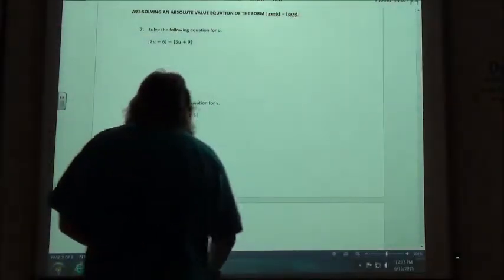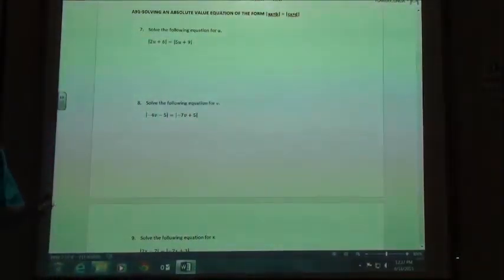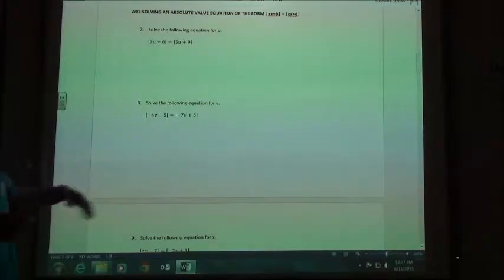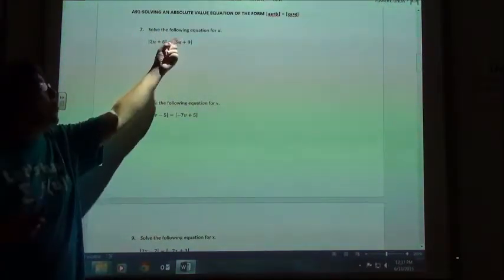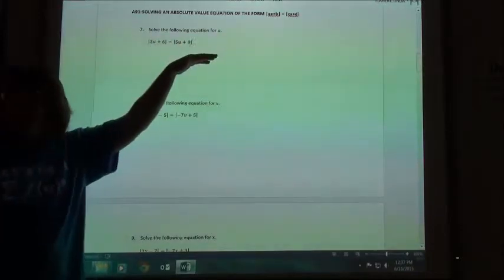So 7, 8, and 9 kind of have the same kind of theory here, that either the absolute value could equal the positive, which wouldn't change any signs, or the negative, which means you'd have the opposite. So when you do your two cases, you're going to leave one side the same both times. The other side, once you'll leave it the same, the other time you do the opposite.